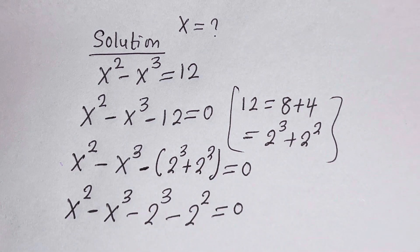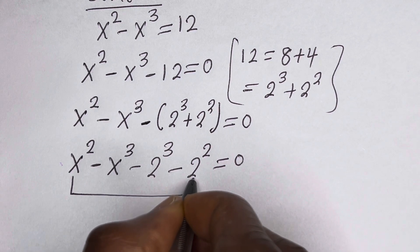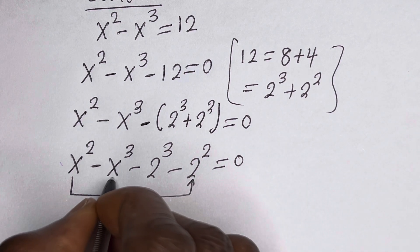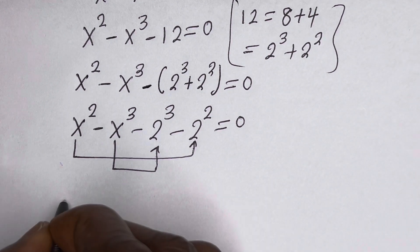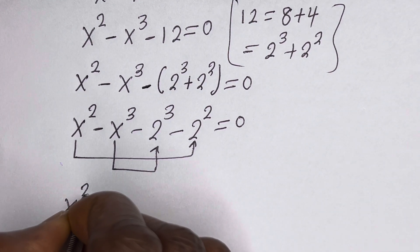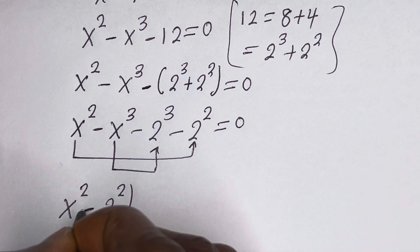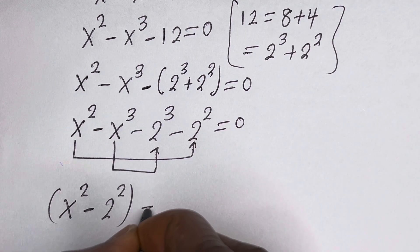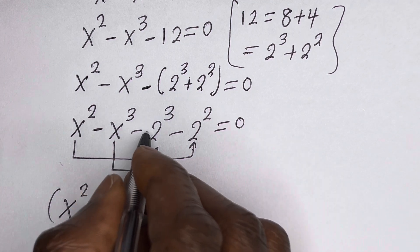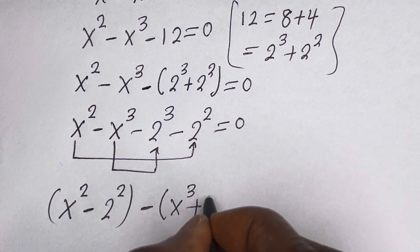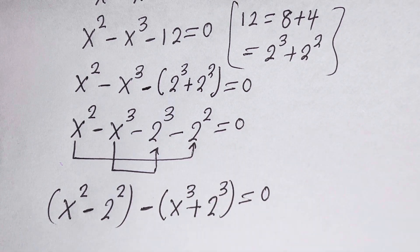Now let's compare this with this, and this with this. Here we will have s squared minus 2 squared, then minus s raised to power 3, and this will be plus 2 raised to power 3, all equal to 0.